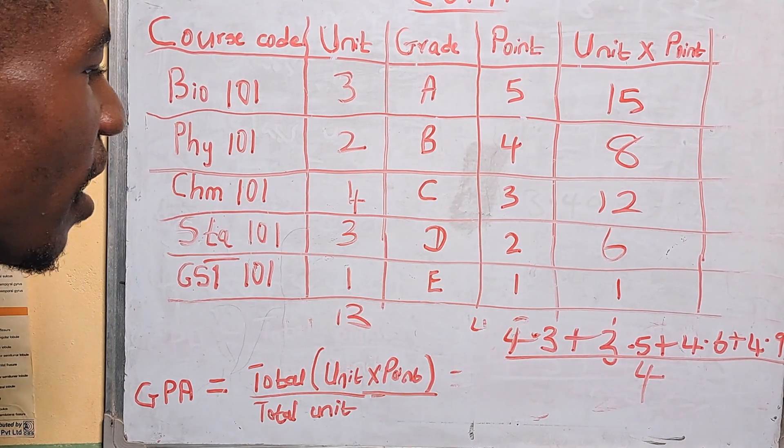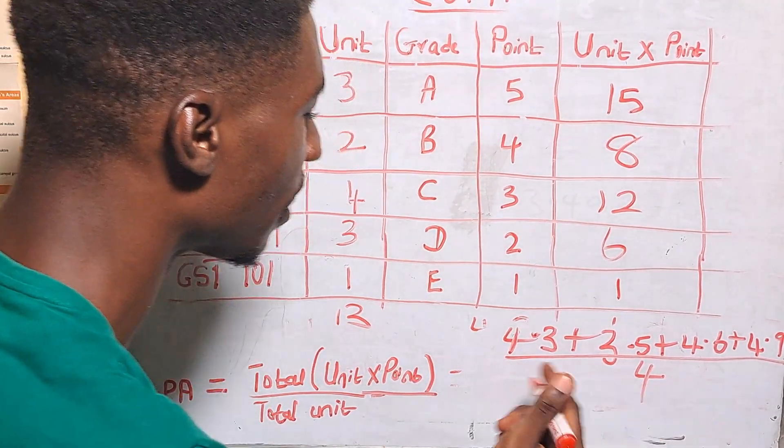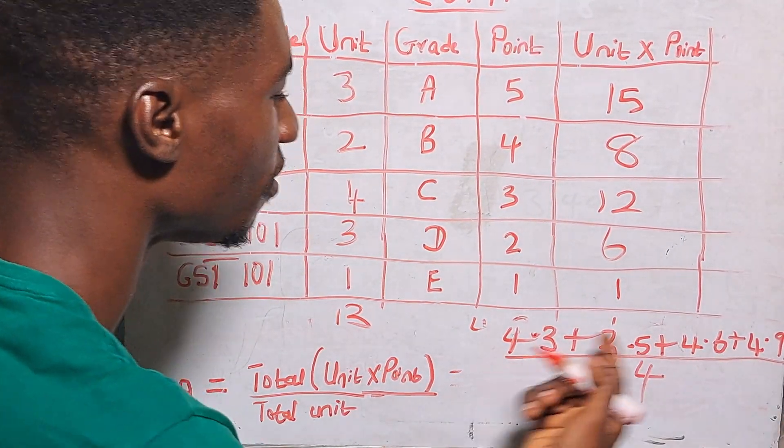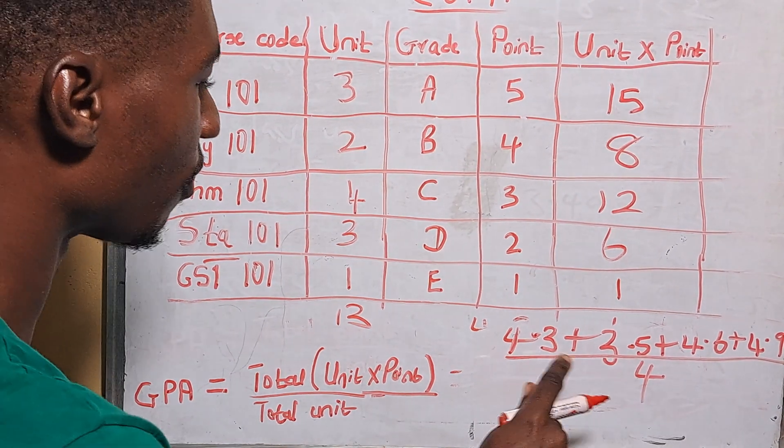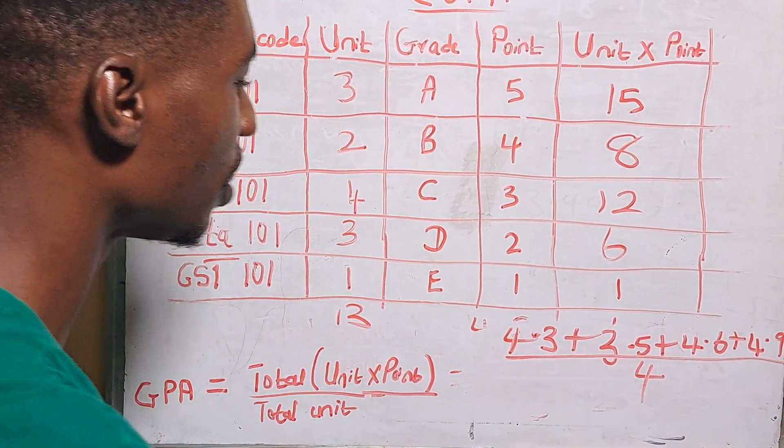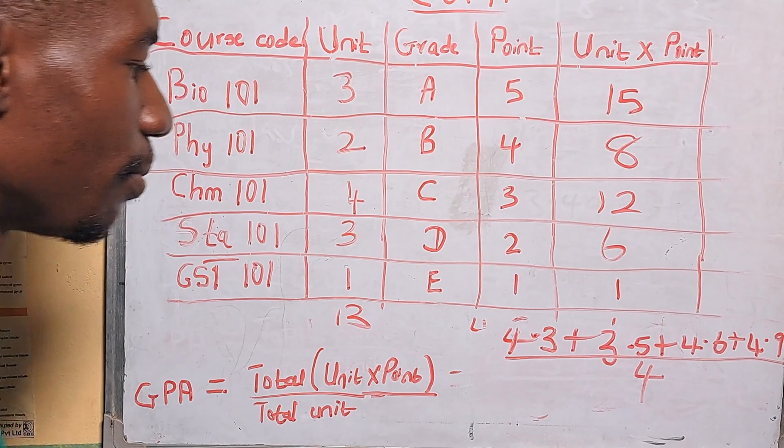So for your first year, this is for students studying a four year course. If you are studying a five year course this will be divided by five and of course the CGPA we have here will be five units. But for a four year course we have four units here, so we're going to add this and divide by four.